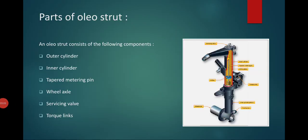The oleo strut is the only true shock absorber, also called an oil or pneumatic strut. A combination of nitrogen and hydraulic fluid is used to absorb and dissipate shock loads on landings. The oleo strut has two main parts: the outer cylinder and the inner cylinder. These are two telescopic cylinders — the outer cylinder is attached to the aircraft structure, and the inner cylinder is attached to the landing gear.